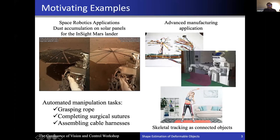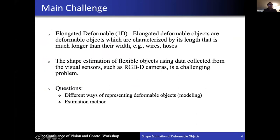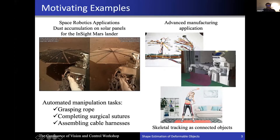The motivation for deformable object shape estimation is the plethora of applications in robotics automation. For example, in space robotics applications, here is a picture of a solar panel where dust accumulation is a common problem. One of the ways to prevent this is covering it with cloth or similar materials. Other applications we have looked at include advanced manufacturing, such as wire harness cable assembly and cloth folding using robots, where shape estimation can be quite beneficial.